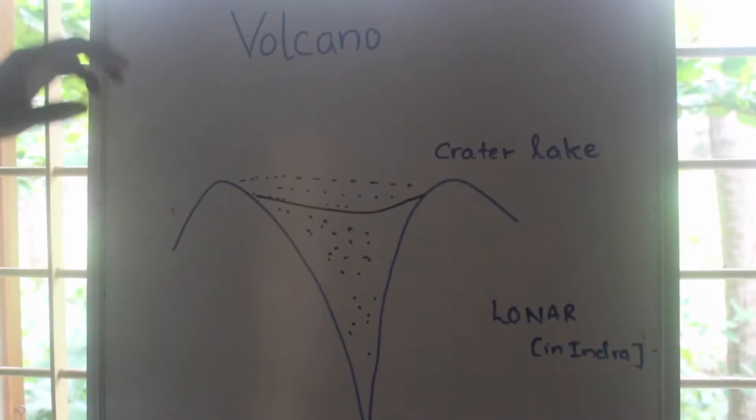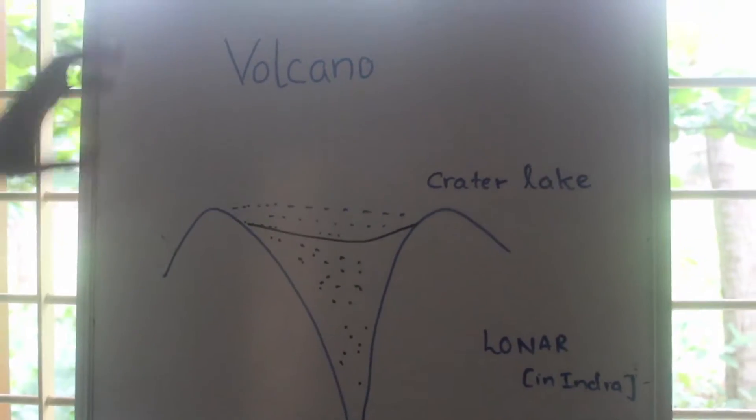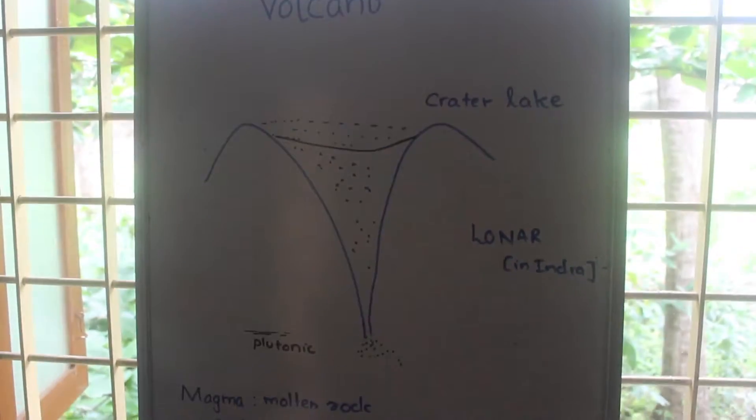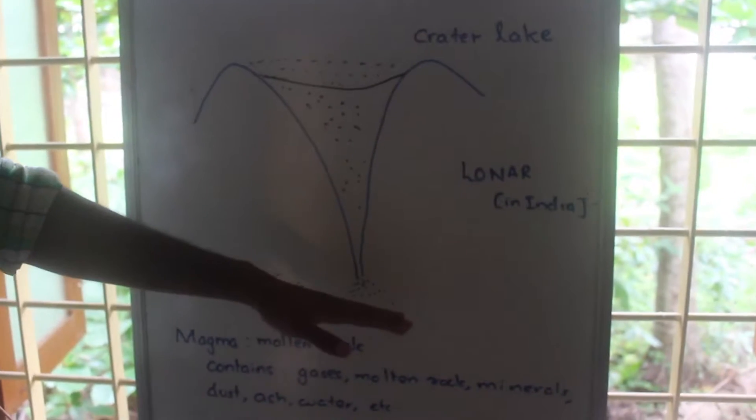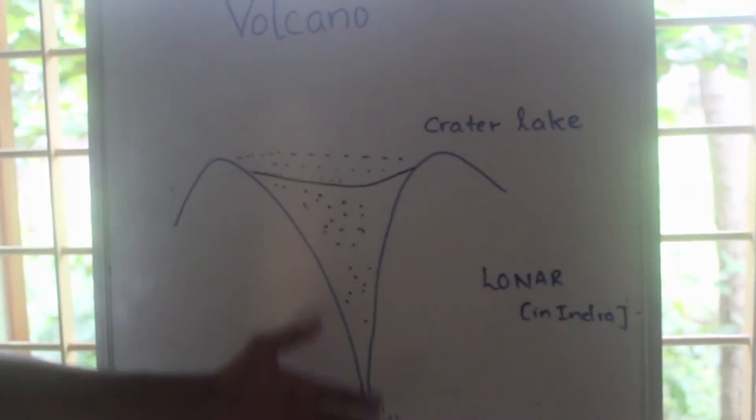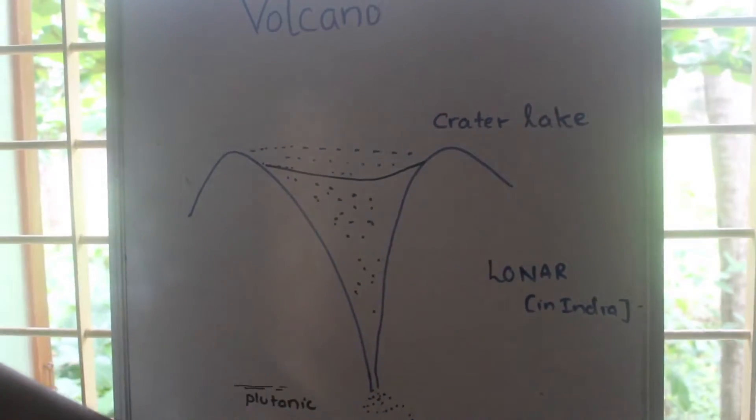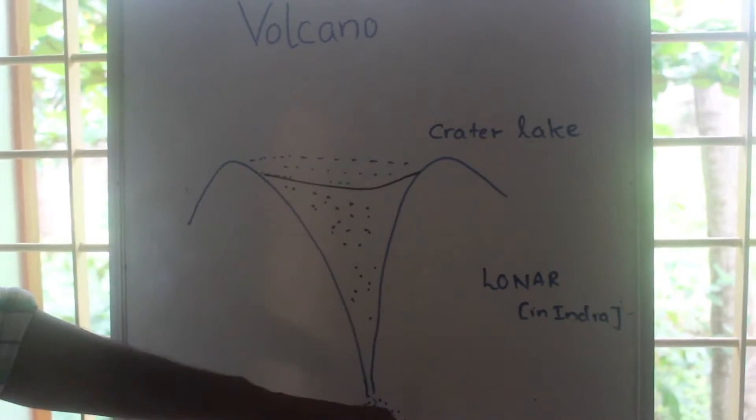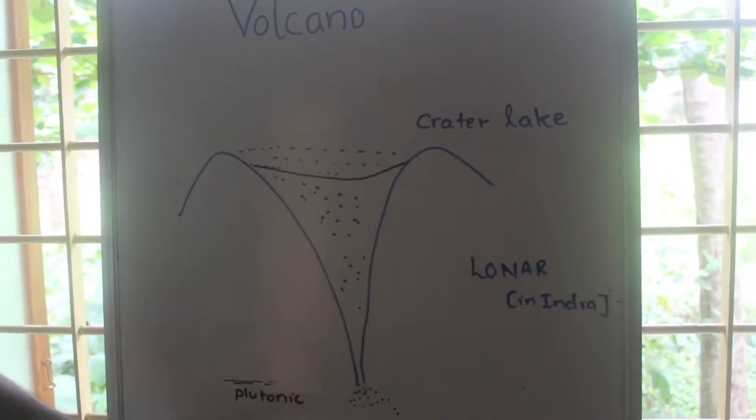We will look into the structure of a volcano with some explanations. Here is the Earth's interior, and we have some molten substance along with gases, minerals, etc. This is called magma.